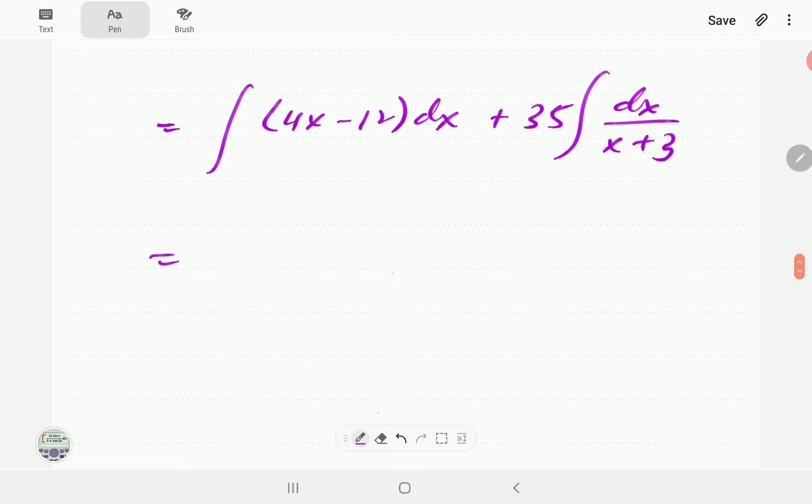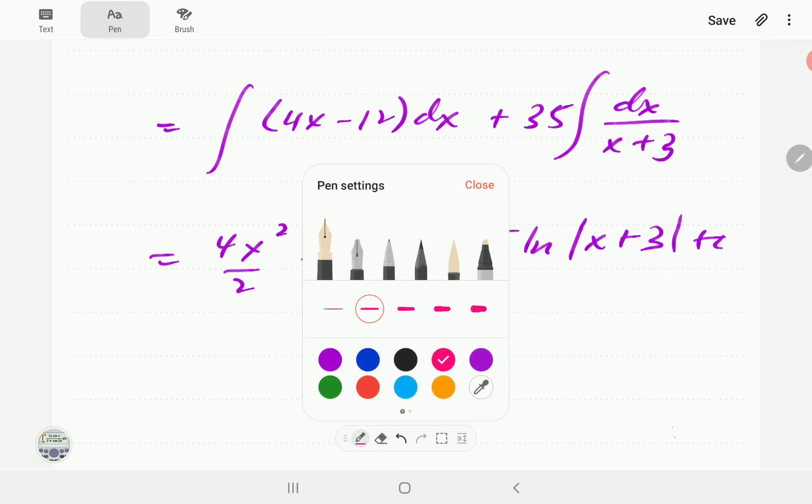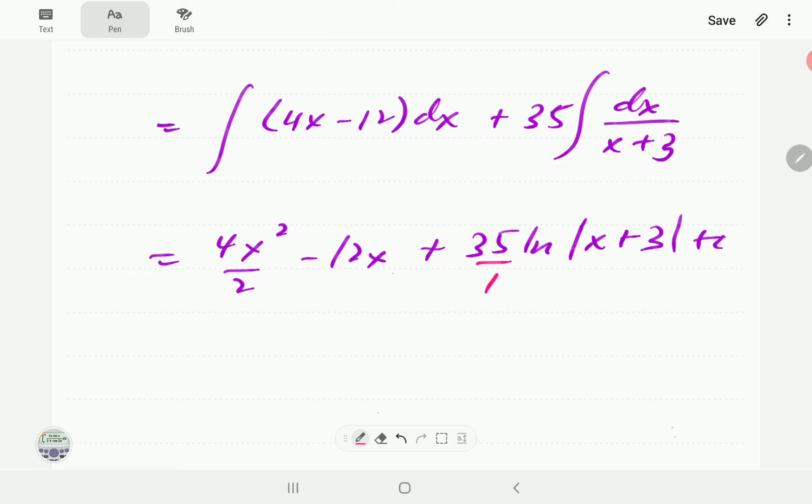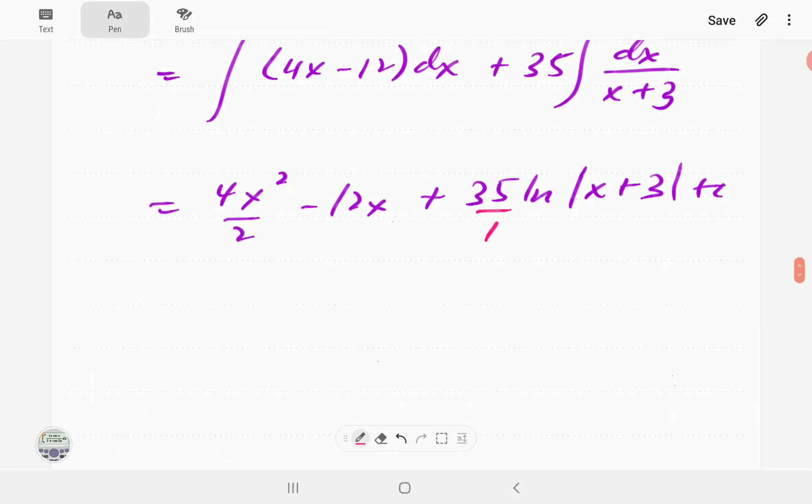The first one here is just a polynomial so we're just going to add one and divide. We're going to get 4x² over 2, this one gives us minus 12x. And then this one is going to be 35 ln of x + 3. Since the coefficient of x is 1, strictly speaking 35 over 1 times that which is just going to be 35. When we simplify here this is going to be 2x² - 12x + 35 ln|x + 3| and then plus C.